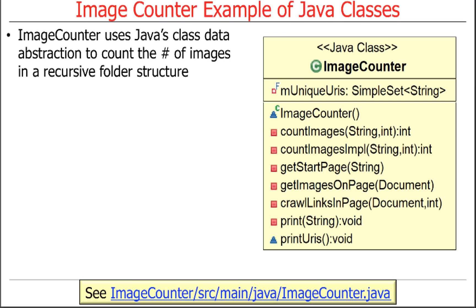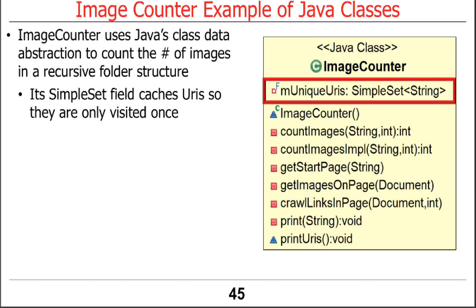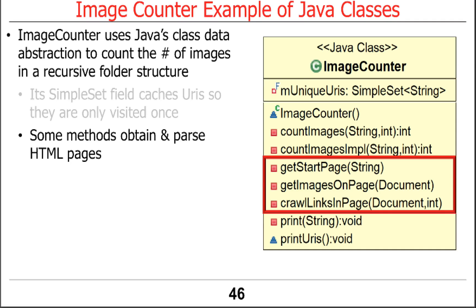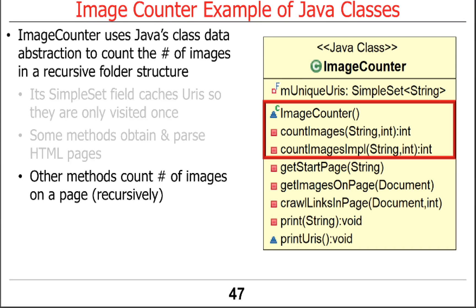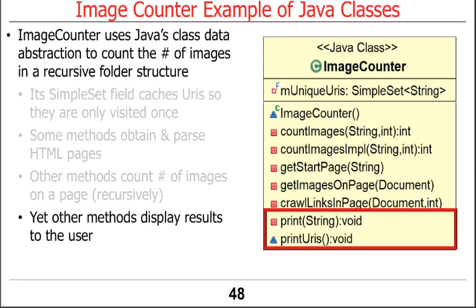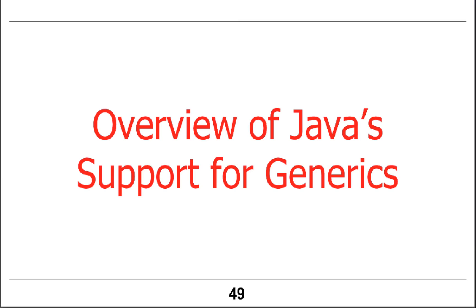Let's look at how this works in our image counter example. We have a class called ImageCounter that uses classes to count the number of images within a recursive folder structure. It has a field called simpleSet used to make sure we only visit each URL once. Then we've got methods to obtain and parse HTML pages, methods to count images on a page recursively going through hyperlinks, and other methods to display results to the user conditionally depending on verbose output settings.